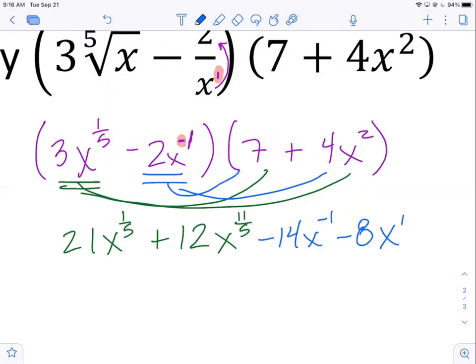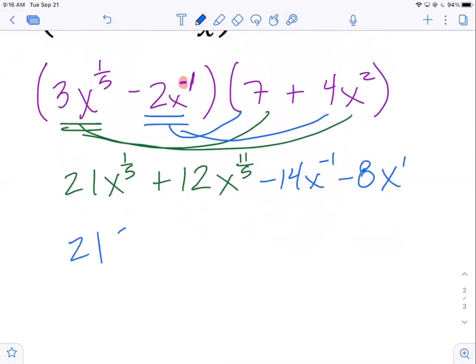Now, do we have any like terms there? Are any of those terms like terms? They're like terms if they have the same variable type, right? And all the variables are different exponents. So none of them are like terms. So the best we could do is just rewrite it back in the original form with radicals and no negative exponents. So that's what we're going to do.